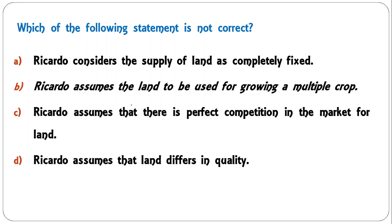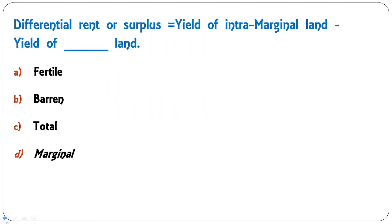Which of the following statements is not correct about Ricardo's theory? Ricardo considered the supply of land to be completely fixed — correct. Ricardo assumed land to be used for growing multiple crops — this is incorrect. Ricardo assumed perfect competition in the land market — correct. Ricardo assumed land differs in quality — correct. So B is the incorrect statement; Ricardo assumed land is used for growing a single composite crop.